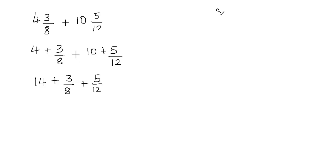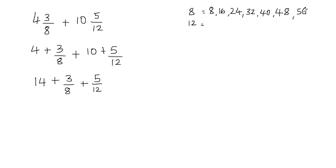I'll show you how to do that. We're going to write the multiples of 8 and 12. Multiples of 8 are: 8, 16, 24, 32, 40, 48, 56, and so on. And then the multiples of 12 are: 12, 24, 36, 48, and so on.